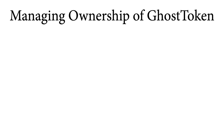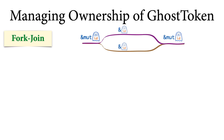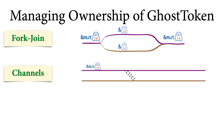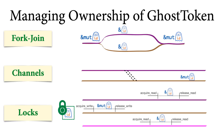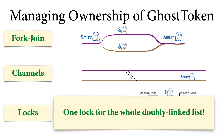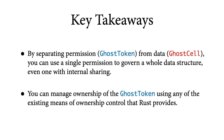Now you've seen how a single GhostToken controls access to all the nodes in the list — but that begs the question: how do you control access to the GhostToken itself? The answer is: however you want. Rust provides a variety of mechanisms for controlling ownership. You can use fork-join parallelism to temporarily share ownership between multiple threads. You can use channels and message passing to transfer unique ownership of the GhostToken from one thread to another. You can use locks like a reader-writer lock to synchronize access — but notice we're using a single lock to protect the entire linked list, not one per node. By separating the permission (the GhostToken) from the data (the GhostCells), you can use a single permission to control a whole data structure with internal sharing.